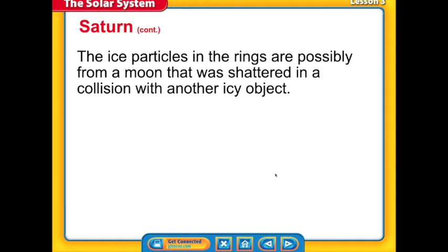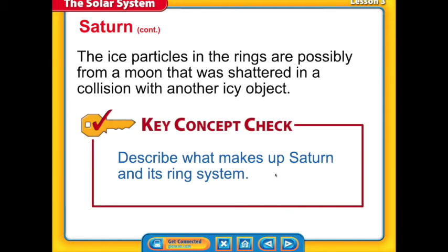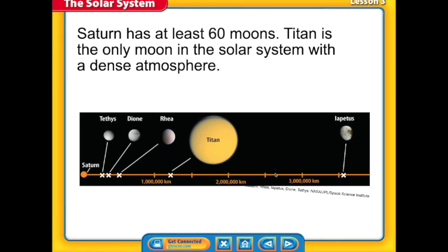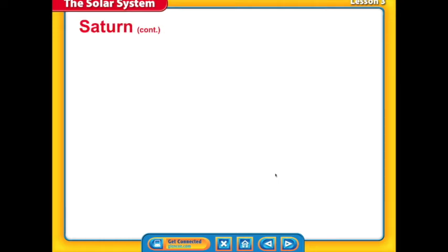So Saturn, the beautiful planet. Let's look at some of these, a comparison of the moons of Saturn. We know that it has more than 60 moons. Titan is the only moon with a dense atmosphere. Here you can see some other moons: Tethys, Dione, Rhea, Titan, and then a moon called Iapetus. Some very significant moons in the system of Saturn.